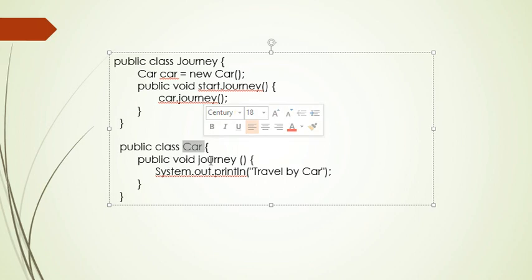In the Car class, we're using the journey method. This is the best example for tight coupling.